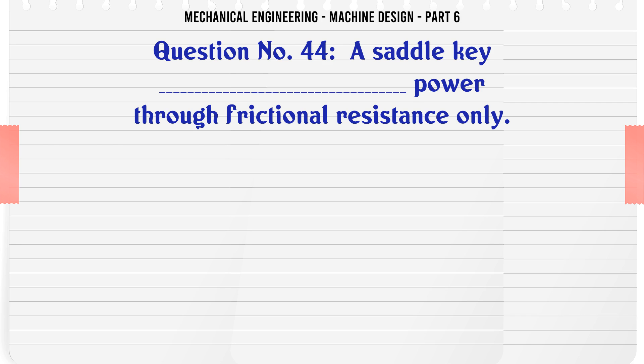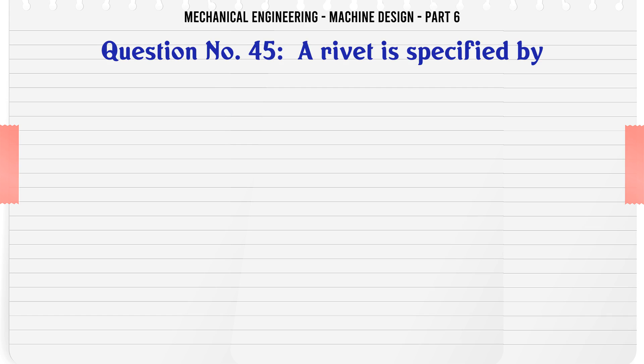A saddle key power through frictional resistance only: A) transmits, B) does not transmit. The correct answer is transmits.